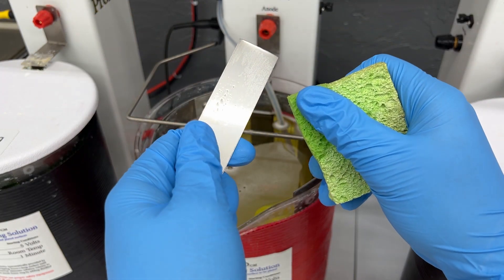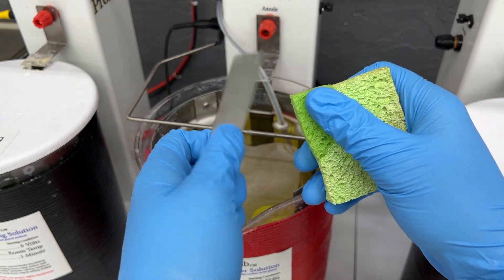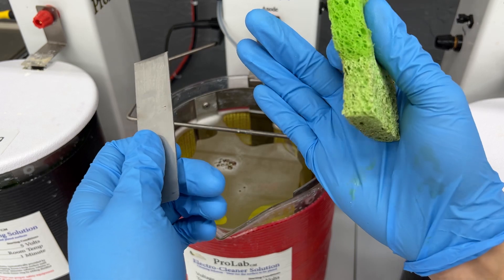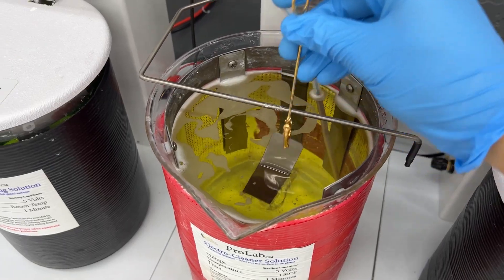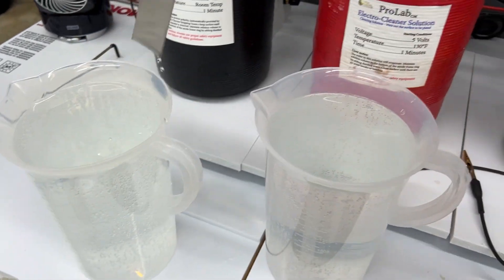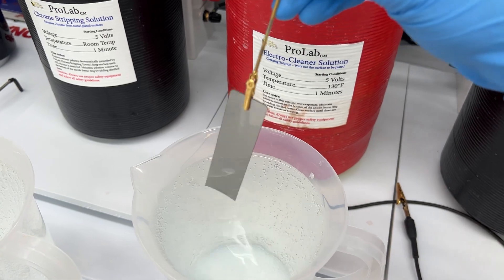Before electro cleaning, you need to make sure that you are cleaning your items before so there are no oils, debris, or residues of any kind on your part. Wear gloves to help with this. Make sure to keep your baths clean. I recommend you use multiple rinse stations between baths so you are not contaminating your other chemicals with the previous chemicals you've used.